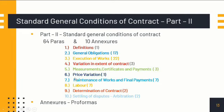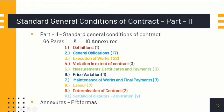The price variation clause is a most important topic asked in departmental exams. Maintenance of works and final payments covers up to what time works are to be maintained after completion and what conditions must be fulfilled for final payment. The labour component covers how workers are to be treated, when wages are paid, and what is to be verified. Determination of contract deals with what happens if the railway fails, if the contractor fails, or if force majeure events like COVID-19, floods, or riots occur. Settling of disputes and arbitration deals with resolving disputes between railways and the contractor.